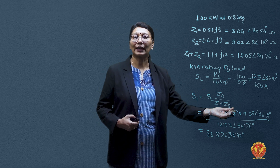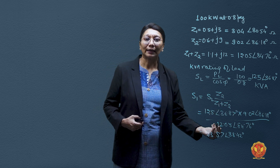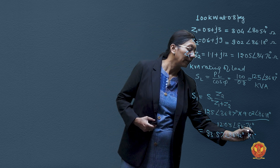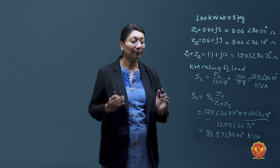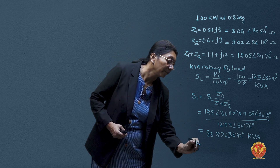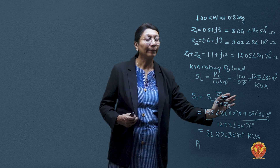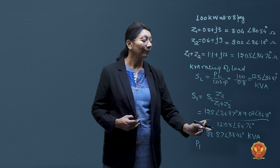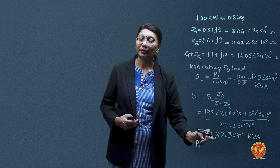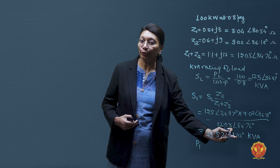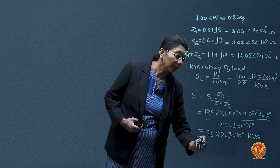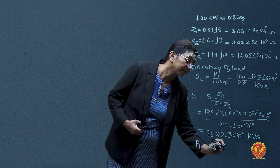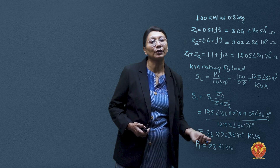In phasor division, magnitudes are divided/multiplied and angles in the numerator are added while the denominator angle is subtracted. So the angle we get is 38.42 degrees. Now if we want to find the active power consumed, we take the cosine component of S — that is, multiply by cos φ. So P1 = 93.57 × cos(38.42°), which gives us 73.31 kilowatts. This is the load sharing of the first transformer.